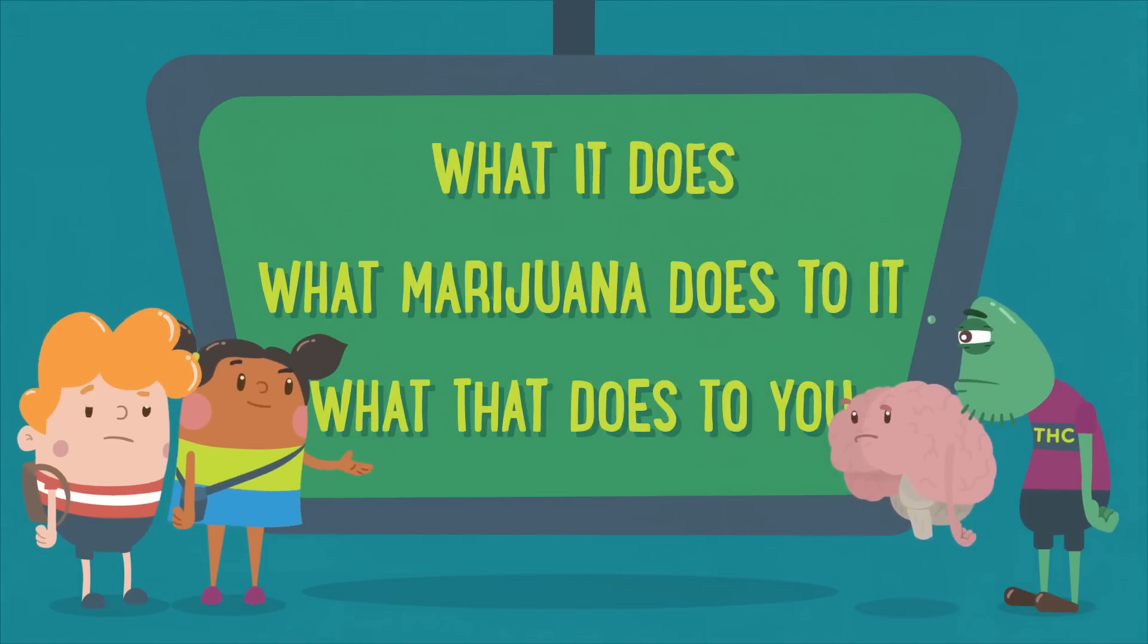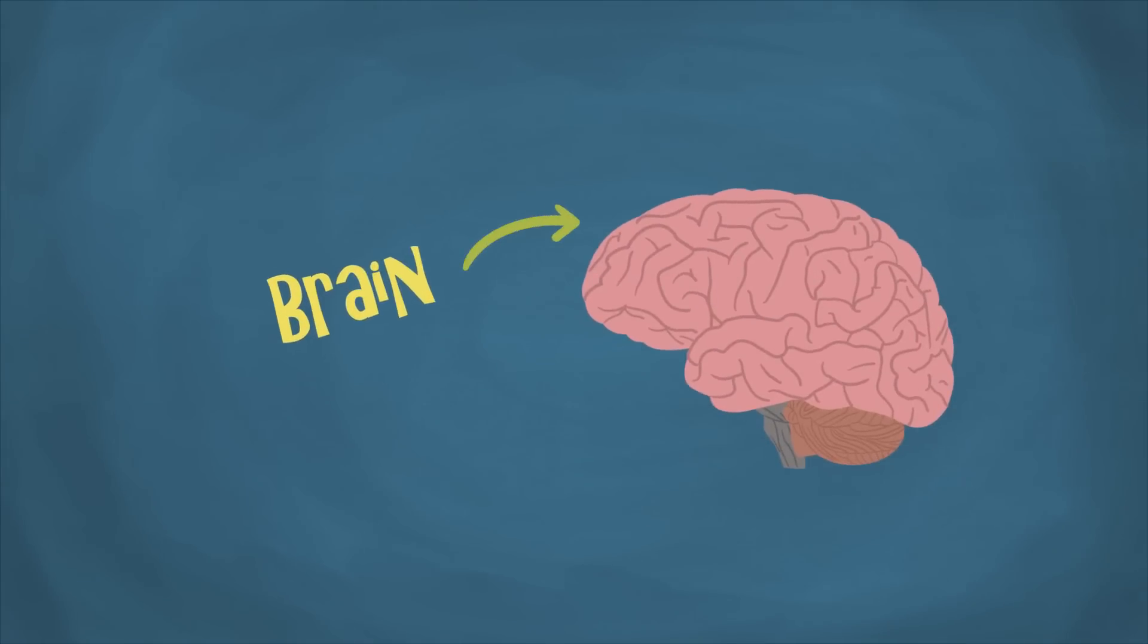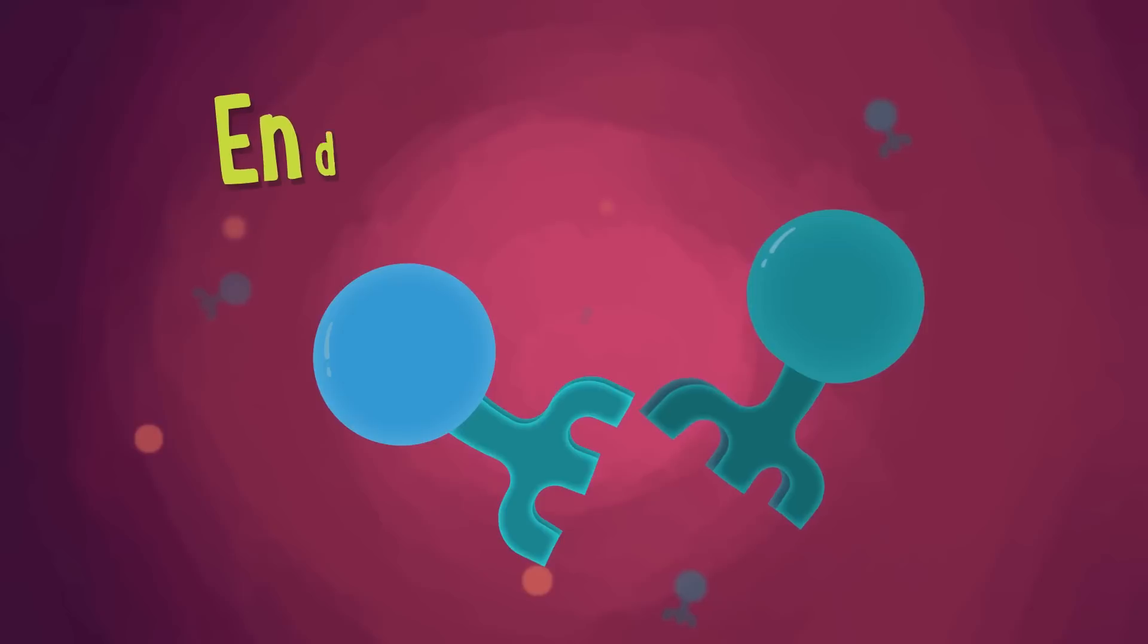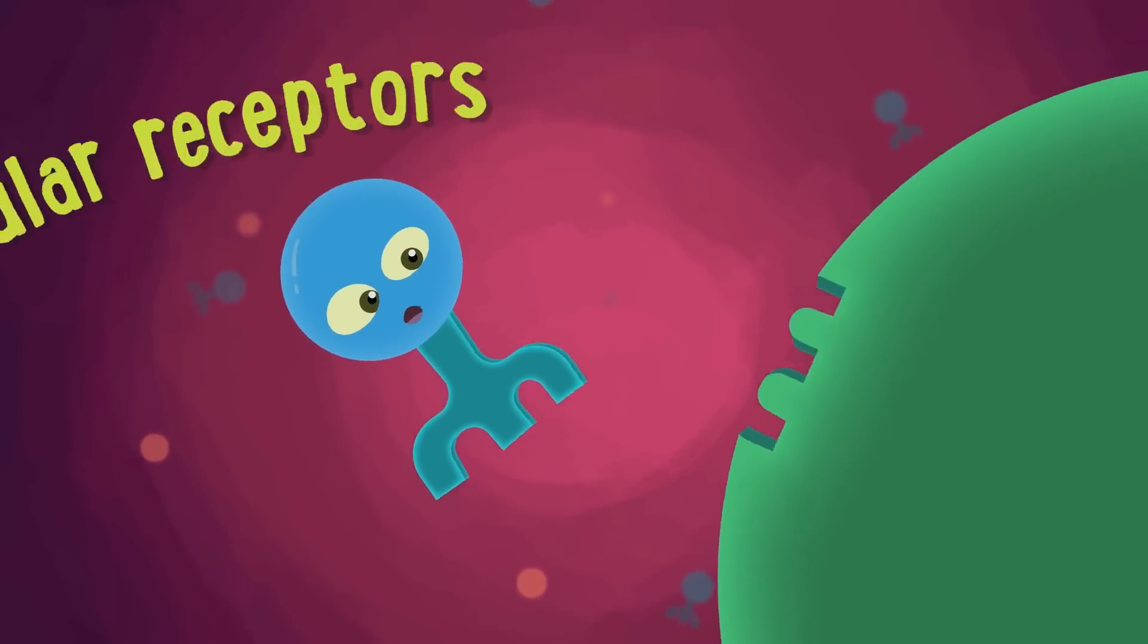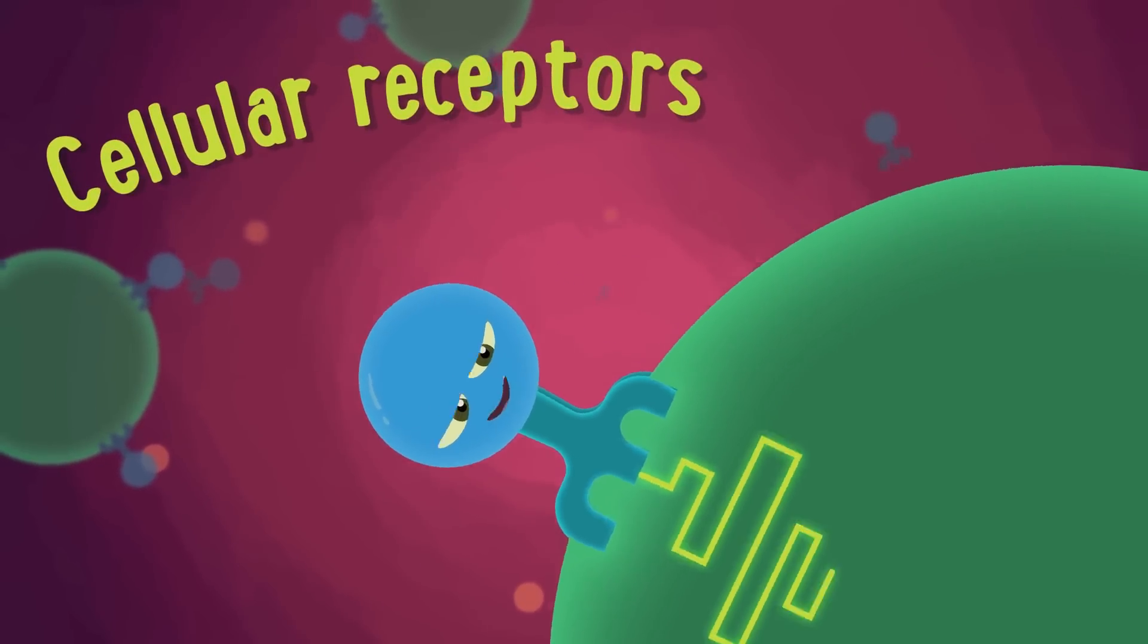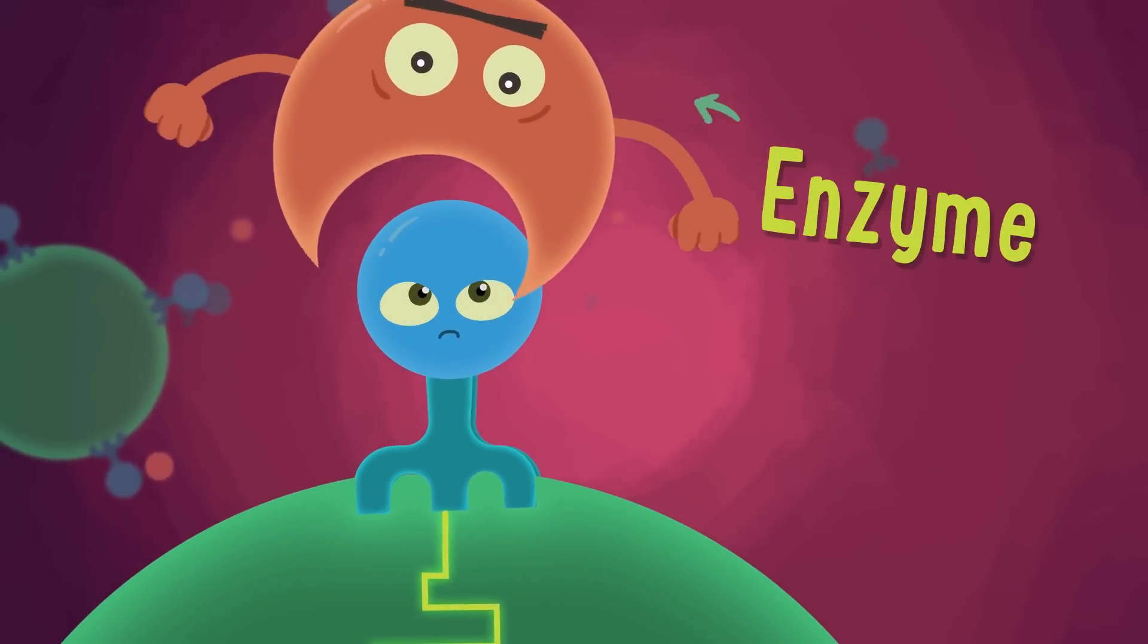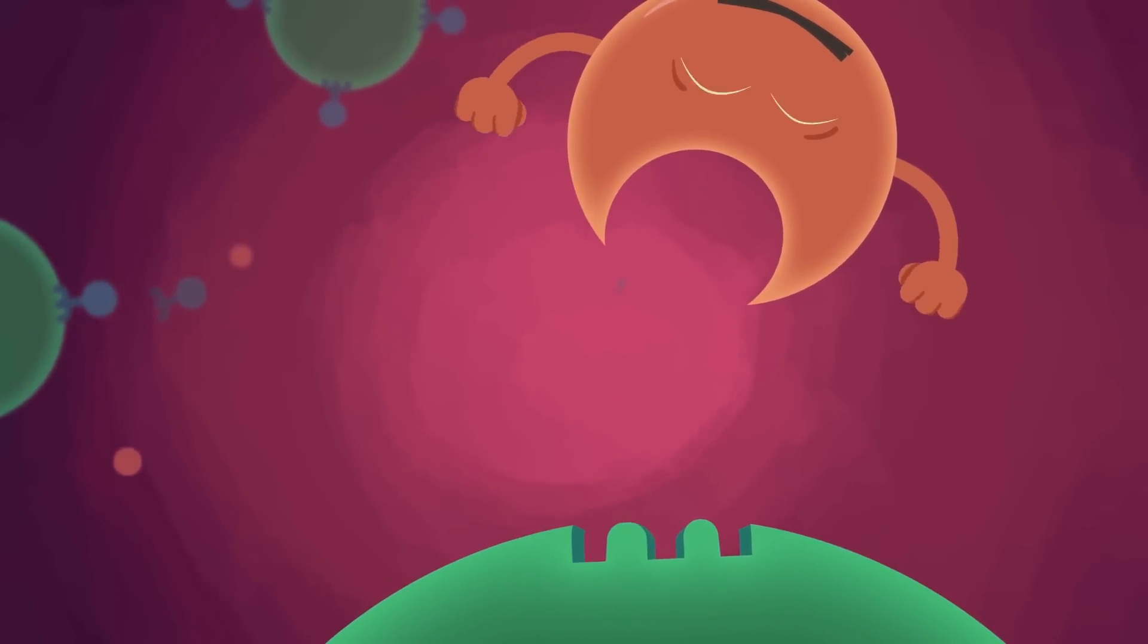Spread throughout the brain, the endocannabinoid system is a biological system made up of chemical messengers called endocannabinoids, cellular receptors that communicate with endocannabinoids, and enzymes that break down endocannabinoids after they've delivered their messages.